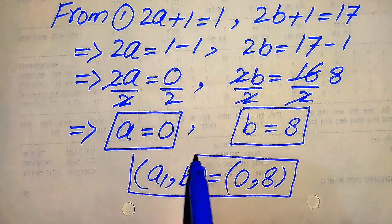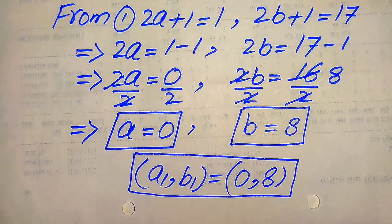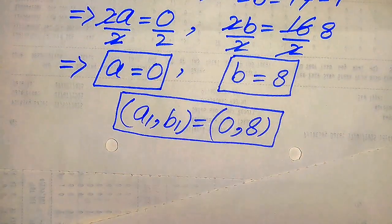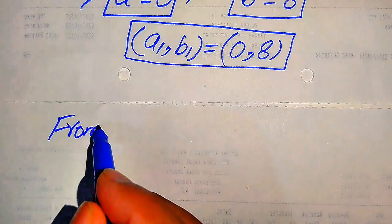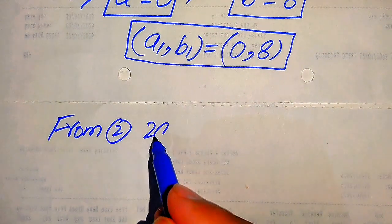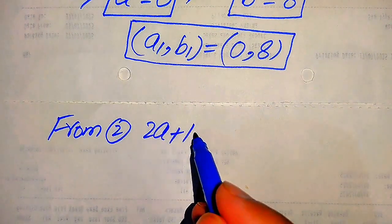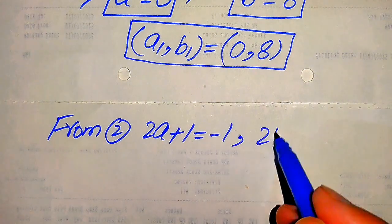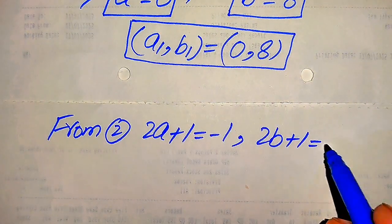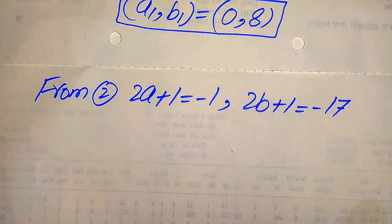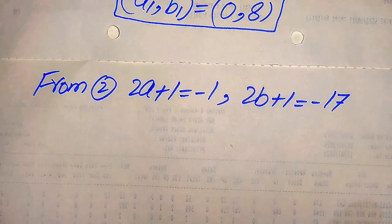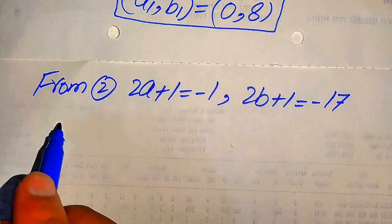This is our first real solution from Case 1. Moving to Case 2, we copy down both equations: 2a plus 1 equals minus 1 and 2b plus 1 equals minus 17. We now find the values of a and b from these two equations.